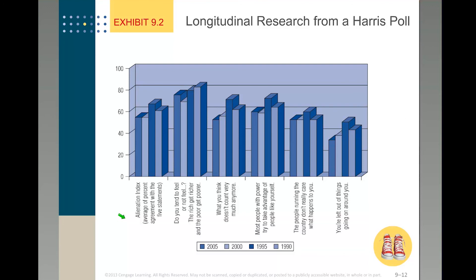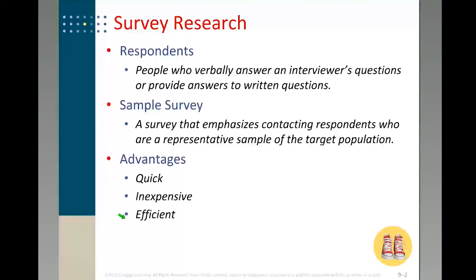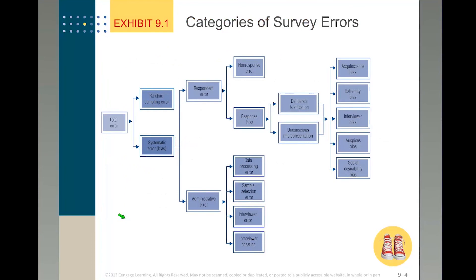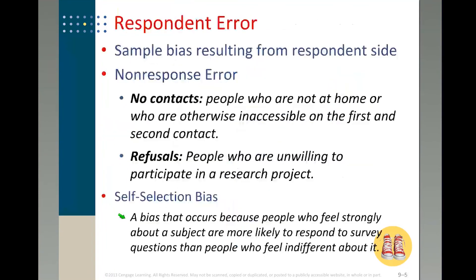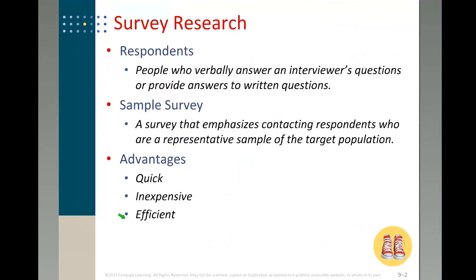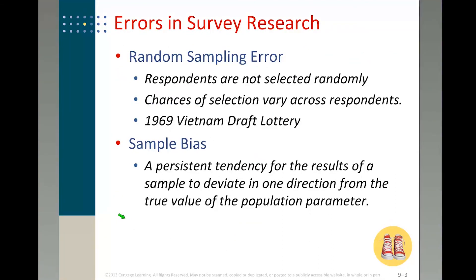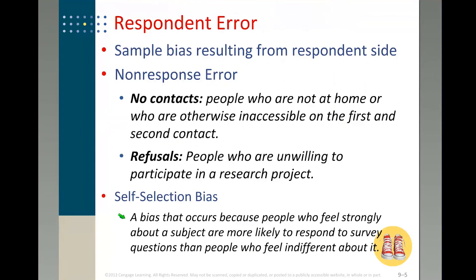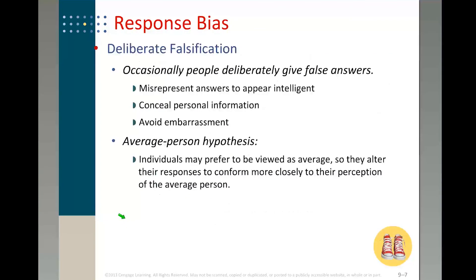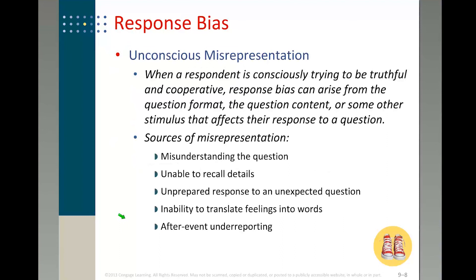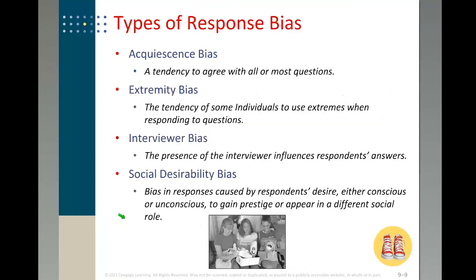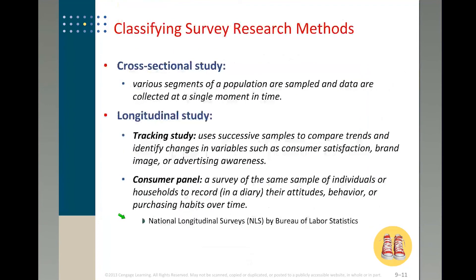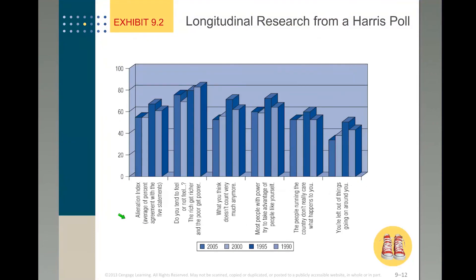That's all for Chapter 9. The bottom line is: understand the advantages of surveys — they are quick, inexpensive, and efficient — but there are tons of survey errors that can occur. The most common ones include random sampling error, which results in sample bias; non-respondent error; self-selection bias; and response bias, where people deliberately or unconsciously give false answers for various reasons. Finally, understand what cross-sectional and longitudinal study means.